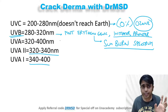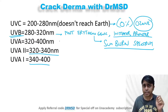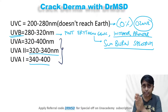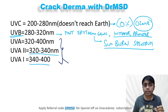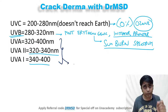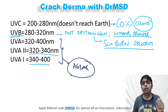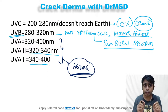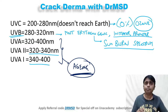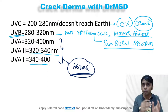For UVA, as already mentioned, it penetrates to the dermis level, causing connective tissue damage, which leads to aging. This is the key point to remember about UVA.